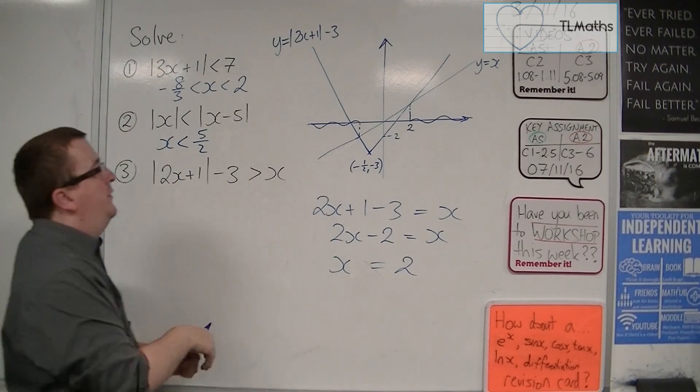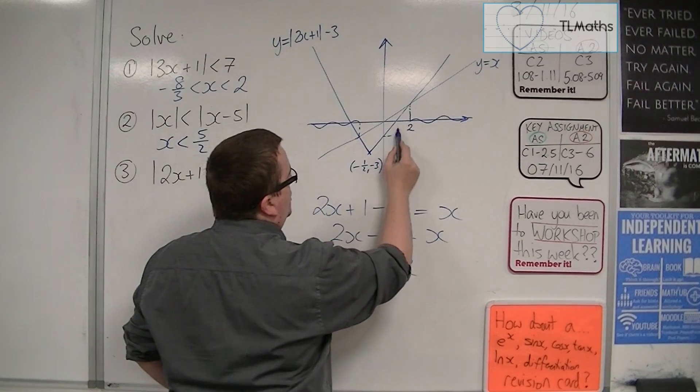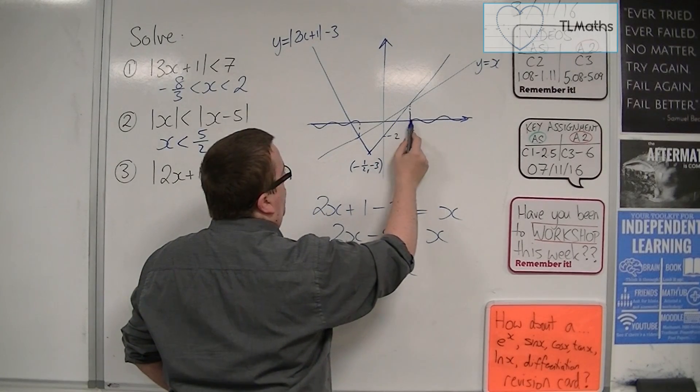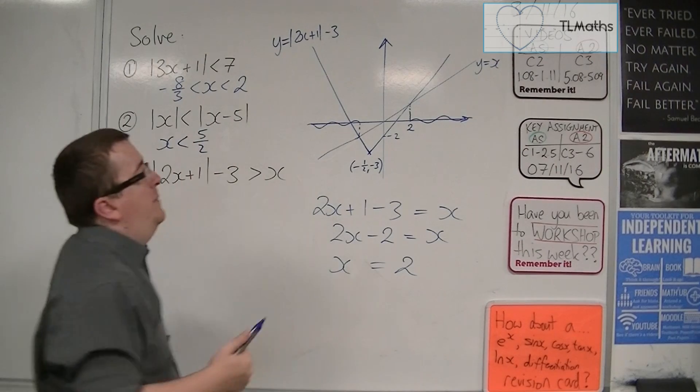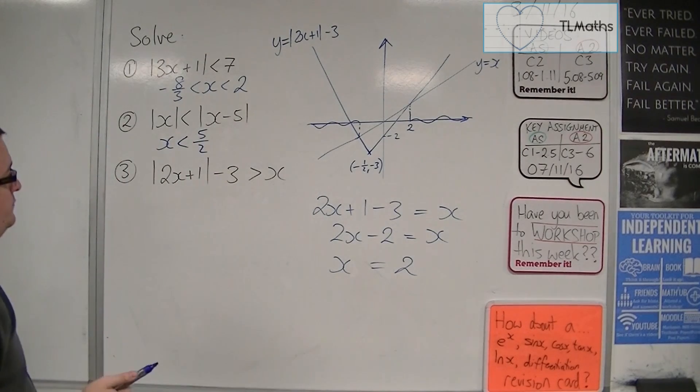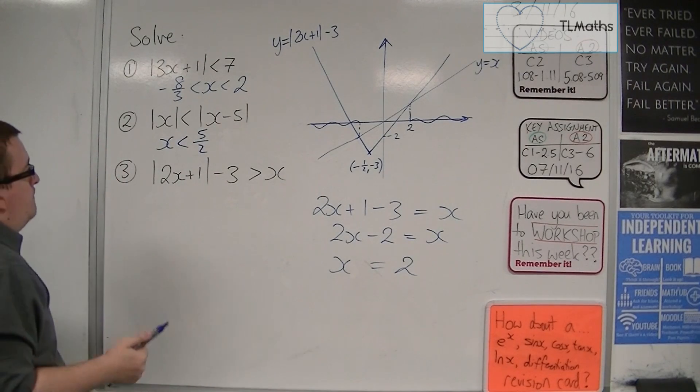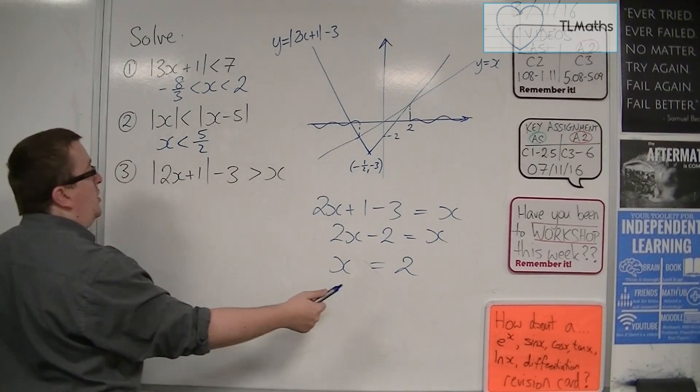Which makes sense, because if the gradient is 2, I'm going 1 along, 2 up. That would get me to 0, 1 along, 2 up. That would get me to 2. So x equals 2 is that point.